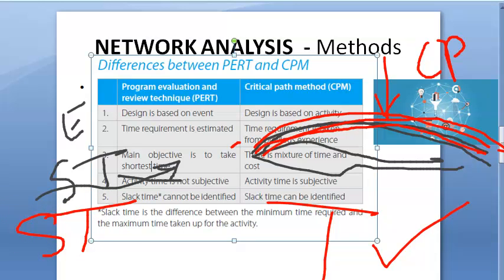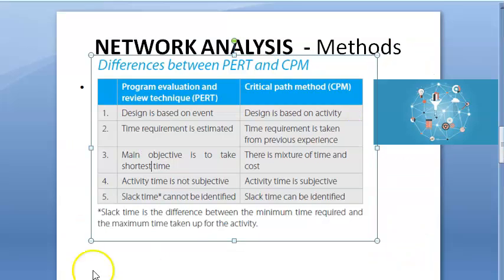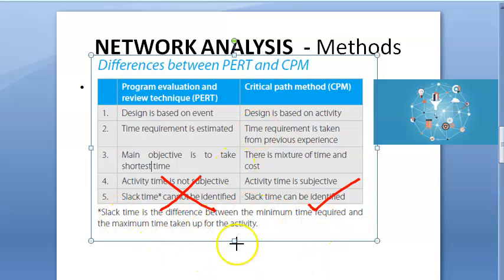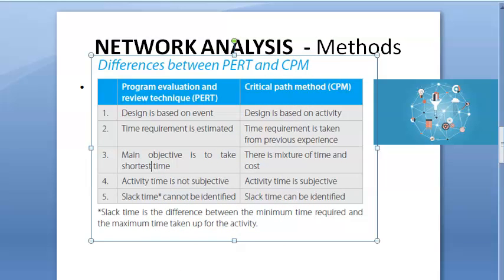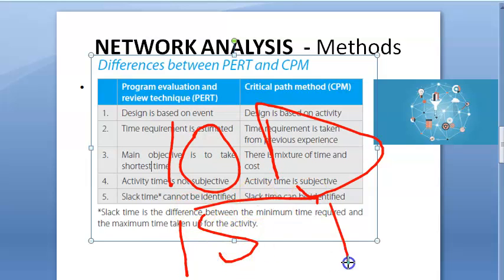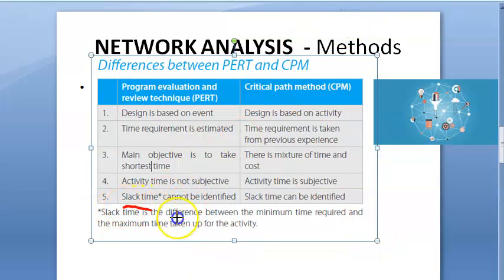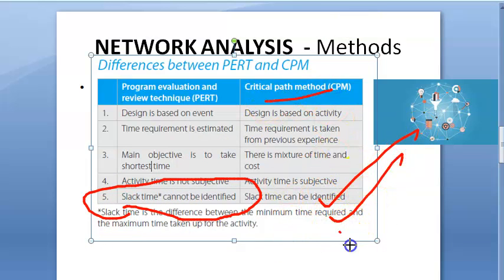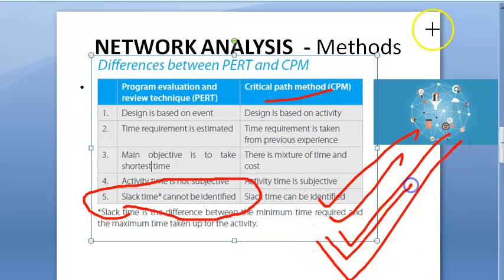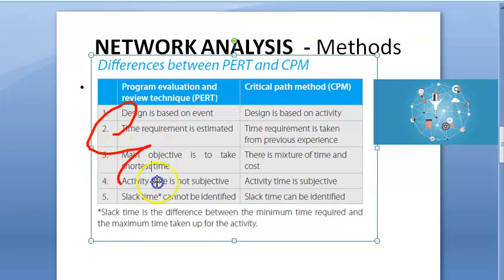Slack time cannot be identified in PERT, but slack time can be identified in CPM. Slack time is the difference between the minimum time required and the maximum time taken for an activity. For example, if you need at least 10 days minimum and 15 days maximum, then 5 days is the slack time. In CPM, since you know the time from previous experience, you can determine the slack time.